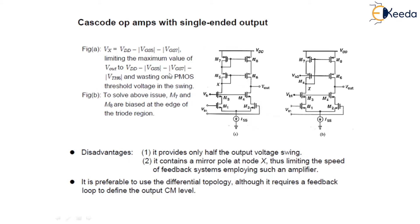They also have a mirror pole at node X, which limits the speed of the feedback system. So it is preferable to use the differential topology, although it requires a feedback loop to define the output CM level.